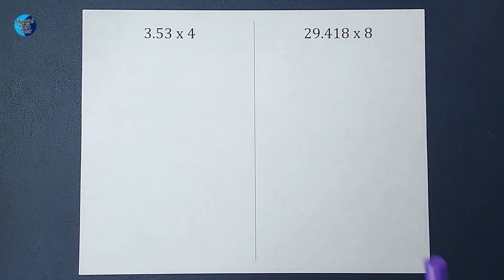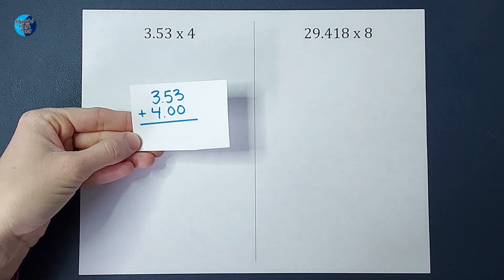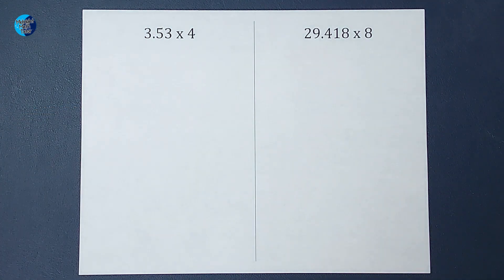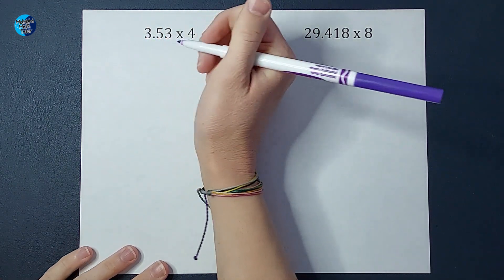If we were adding or subtracting these, you would need to line up the decimals like that, right? But when we multiply them, you don't have to worry about that. If you want to see why, I'll link a video for them in the corner. But let's go ahead and see what this does.